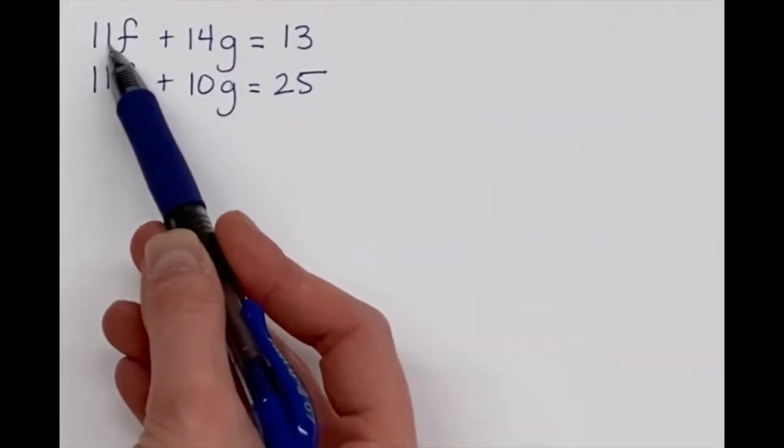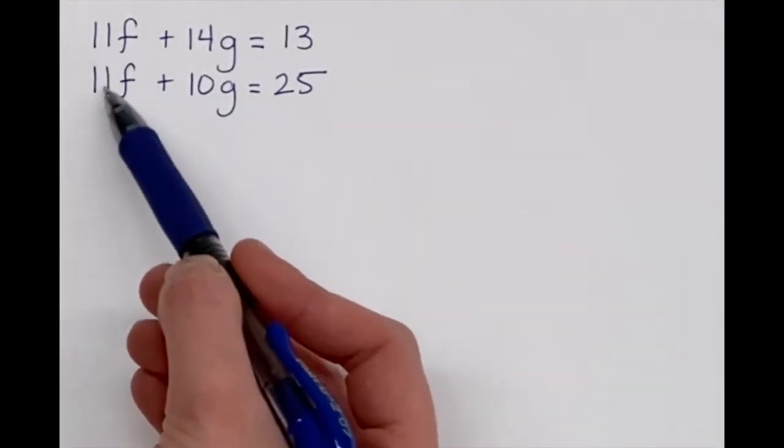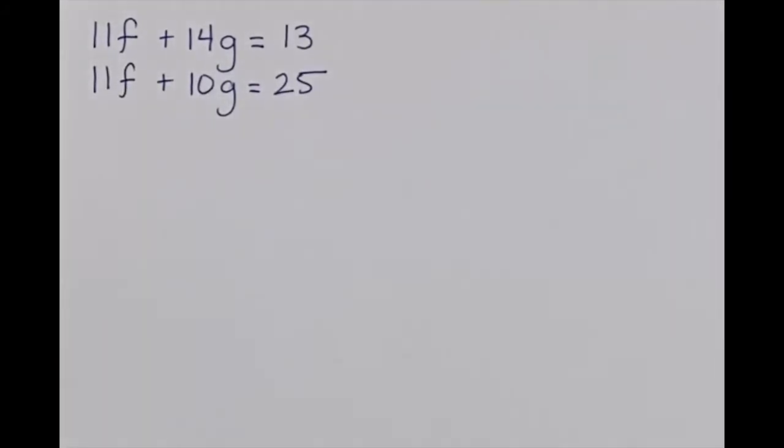And it's going to be slightly different because our coefficients on the f are identical. Same sign, same number. So we can't add to eliminate. I could multiply through by a negative 1 on one of the equations if I wanted to add to eliminate. But we really want to be as efficient as possible.